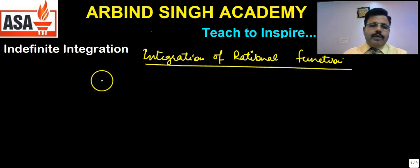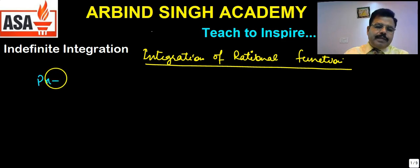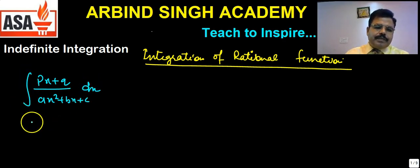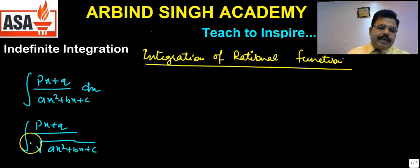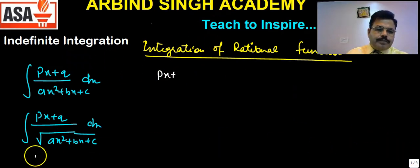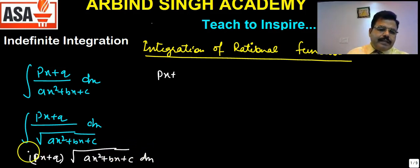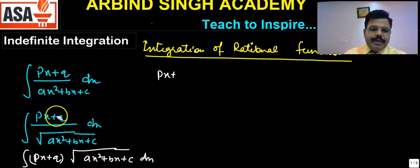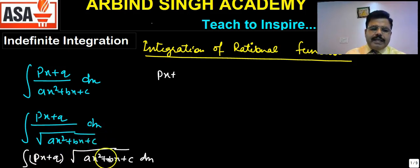To answer such questions: here we have (px + q) divided by (ax² + bx + c), or integration of (px + q) divided by the square root of (ax² + bx + c), or integration of (px + q) multiplied by the square root of (ax² + bx + c) dx. It means anywhere where px + q is in the numerator and the denominator is a quadratic — or linear in numerator and quadratic under a square root in denominator.